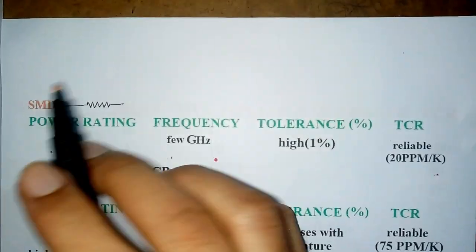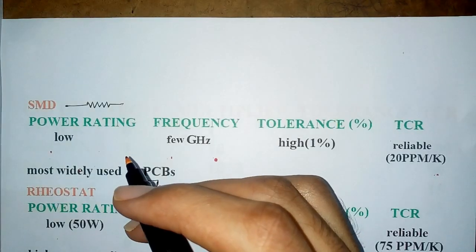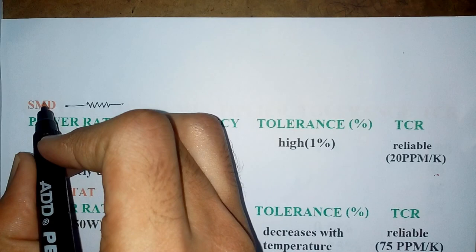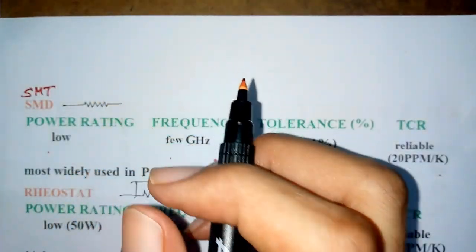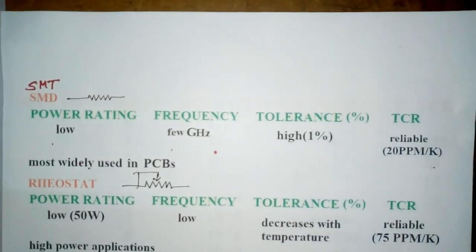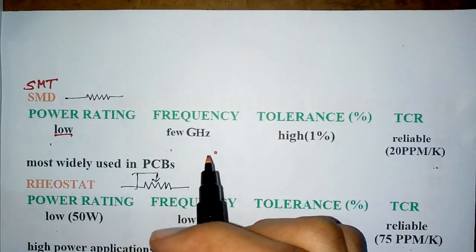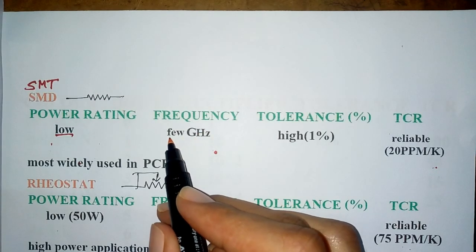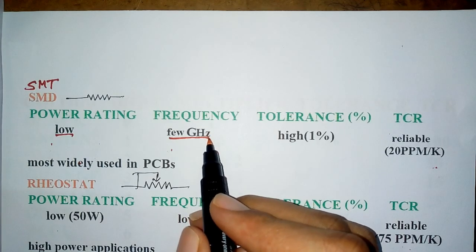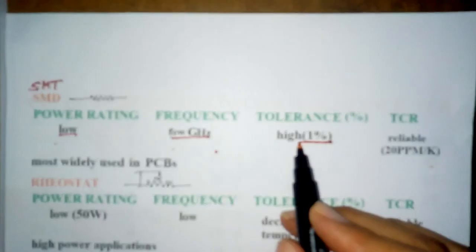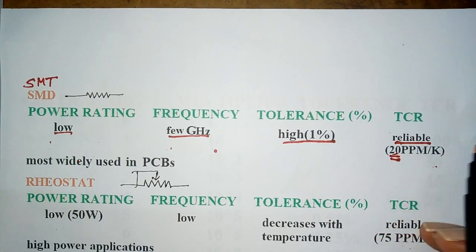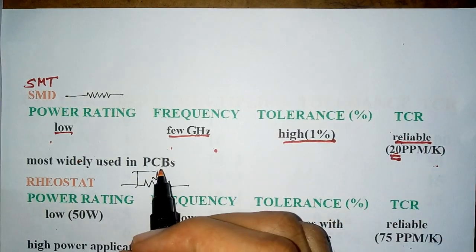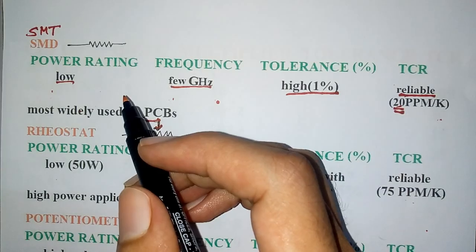Next is SMD resistor, which is surface mount resistor. It is represented as SMT or SMD. It is small in size and widely used in PCBs. Its voltage rating is low and frequency is stable to few gigahertz, which is highly stable. It has high tolerance and a reliable TCR value. For PCBs, this TCR value is very reliable.